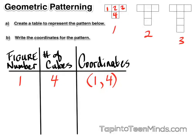In figure number two, we have the same four cubes, but now we have an additional cube added on. So for figure two, we have five cubes, and our coordinate would be two comma five.